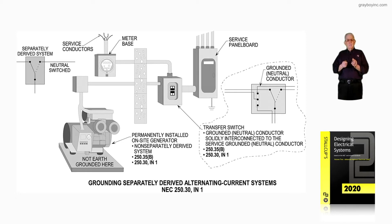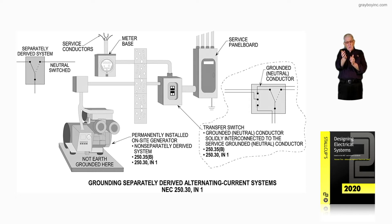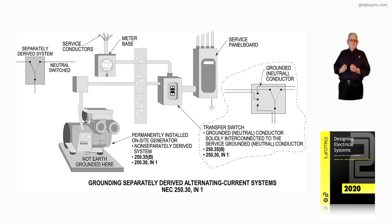All you and I as electricians, designers, or inspectors have to remember is: do they switch the grounded conductor with the ungrounded conductors? If the answer is yes, then informational note 1 to 250.30 says you ground the generator. But if they do not switch that grounded conductor and it ties into a bar that is grounded to the service ground and back to the utility ground, then you don't ground the generator. The generator is considered grounded through the service equipment ground according to informational note 1.